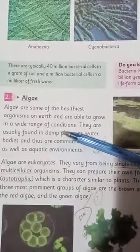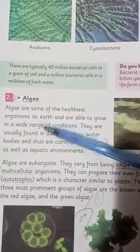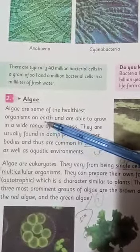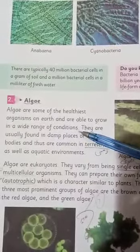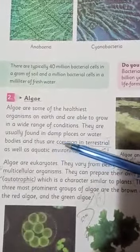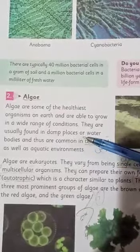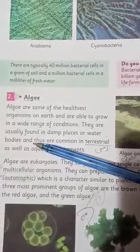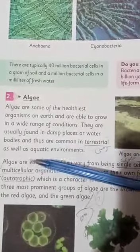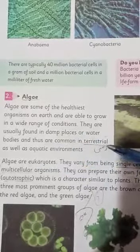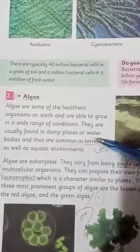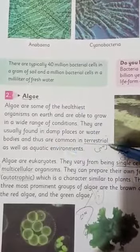Now come to your next heading: alga. Alga are some of the healthiest organisms on Earth and are able to grow in a wide range of conditions. They are usually found in damp places and water bodies, and thus are common in both terrestrial as well as aquatic environments.